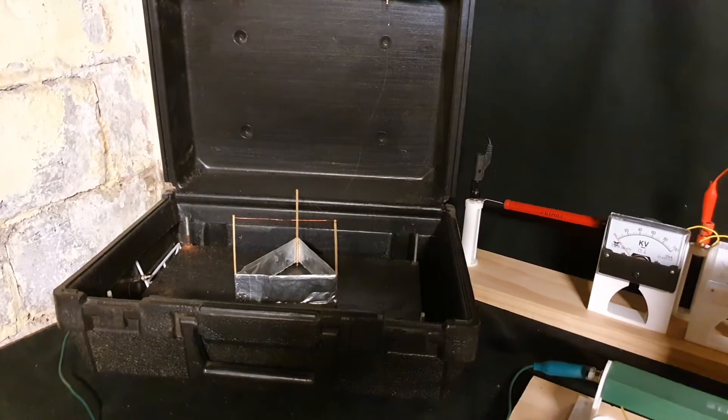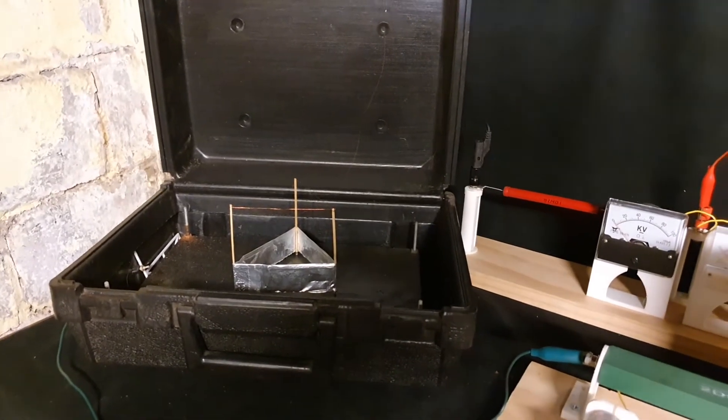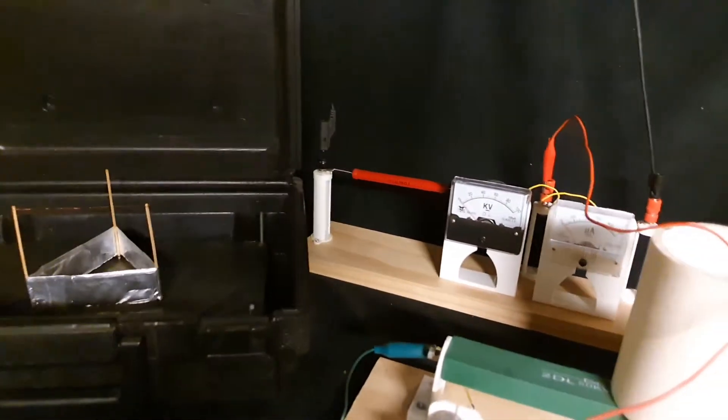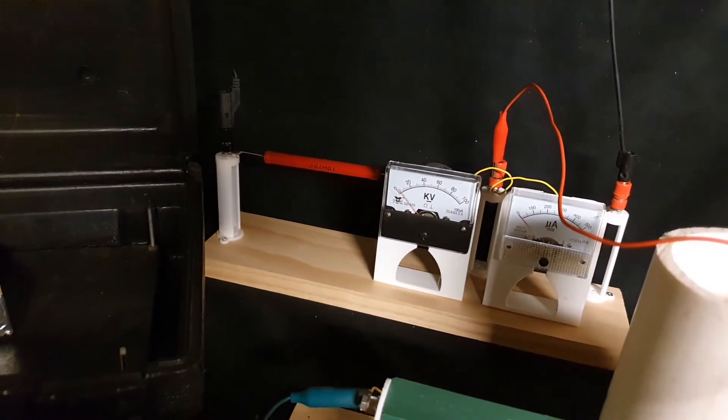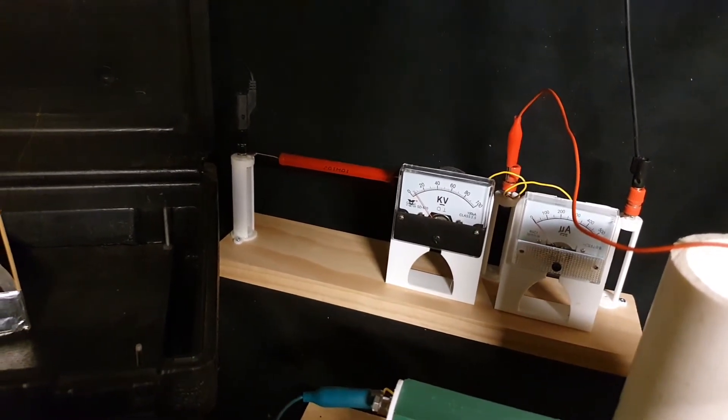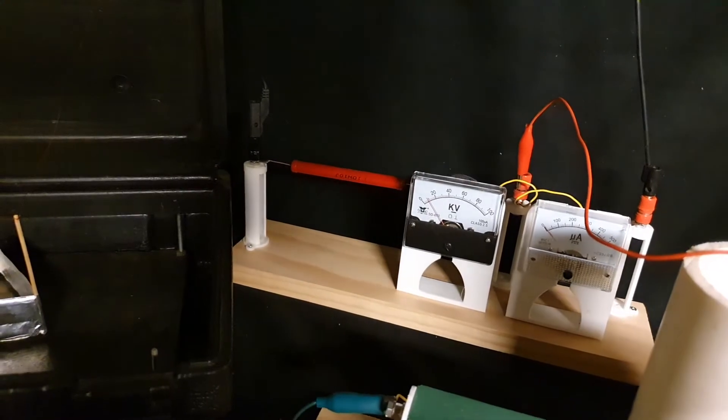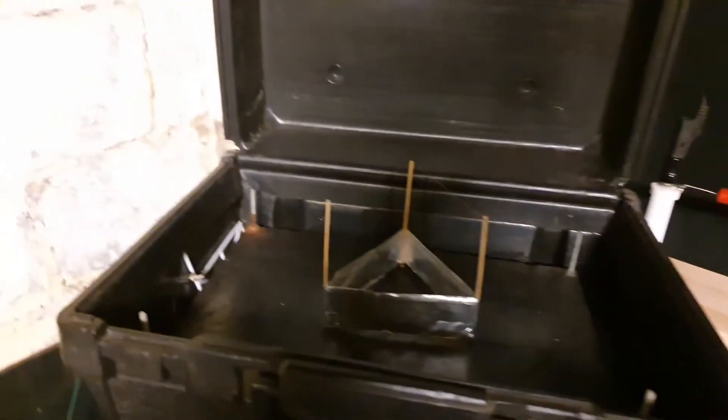All right, we're going to power up the lifter here. So you'll begin to see the high voltage meter deflect about 10 kV. You can hear a little bit of corona from the lifter.